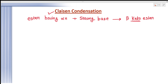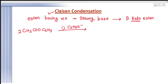For example, if we take ethyl acetate — CH₃COOC₂H₅ — we take two molecules of it in the presence of a strong base like ethoxide, and then treat it with acid. In the presence of a strong base it will form a beta-keto ester: CH₃COCH₂COOC₂H₅. You can see that at the beta position there is a keto group, so it is called a beta-keto ester.